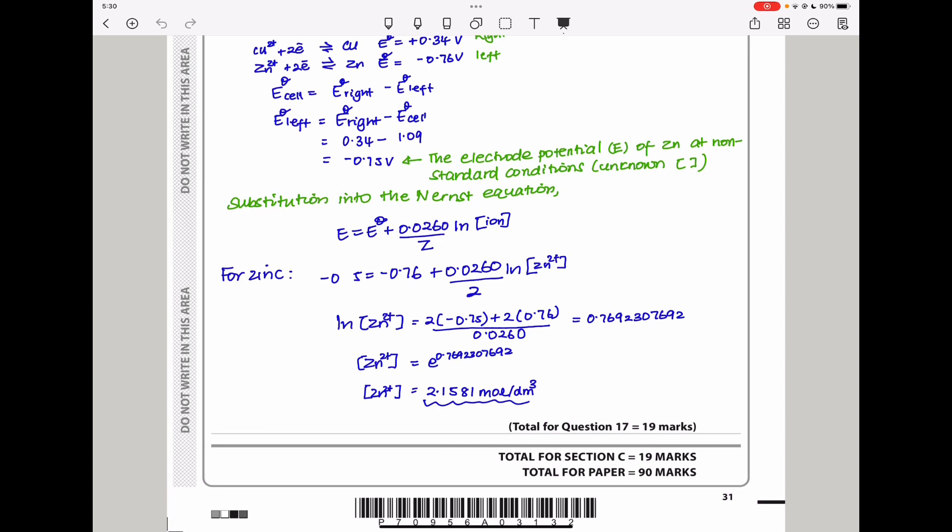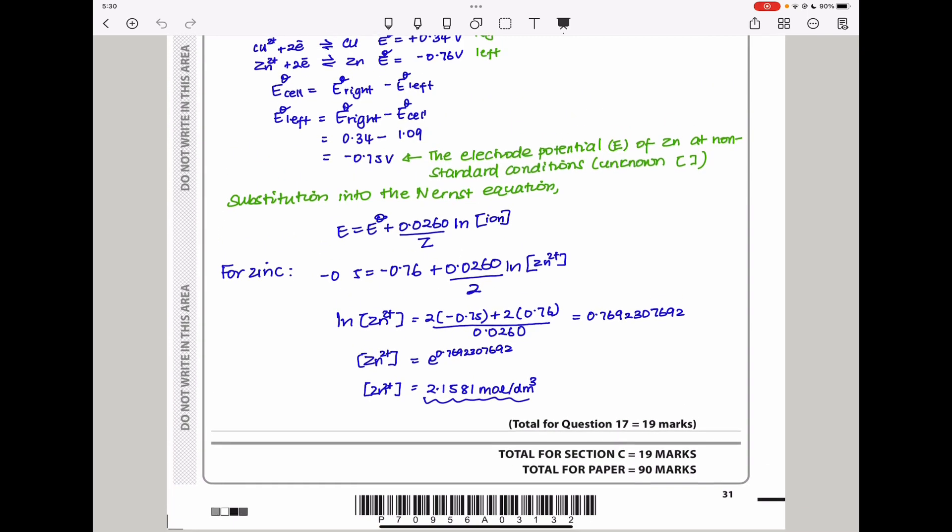For those who do not do mathematics, if natural log of zinc(II) equals that, then you can introduce the exponential. Concentration of zinc should be exponential of that. The concentration of zinc(II) is equal to 2.1581 mol per dm³. This brings me to the end of Question 17, as well as the end of this paper.